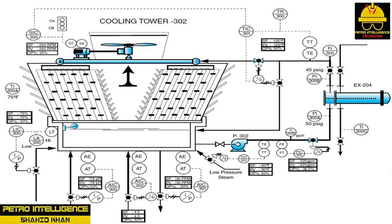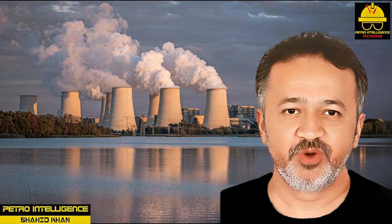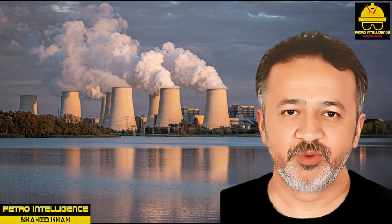CTW-302 uses a fan to draw air into and across the fill. The fan is located on the top of the cooling tower and slowly draws air into the system and rapidly discharges it at the exit point. The cooled water continues to drop through and over the fill until it enters the basin. A typical cooling tower is a heat transfer device designed to cool water so it can be reused in industrial applications.